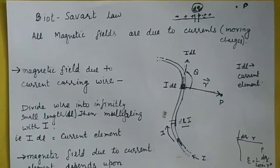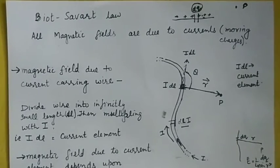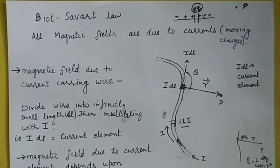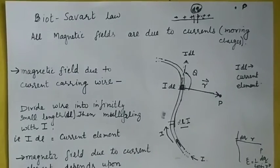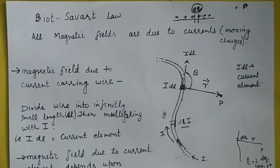In this video we will discuss Biot-Savart's law. Biot-Savart's law is used to find out the magnetic field due to a current carrying wire. Generally, all magnetic fields are due to currents, that is moving charges or charges in motion.